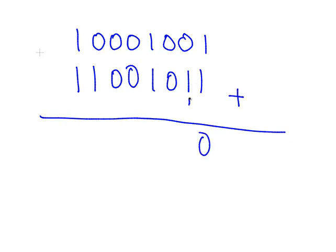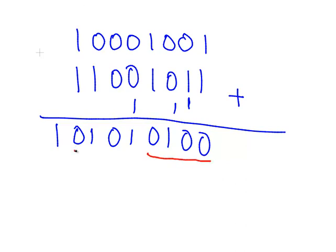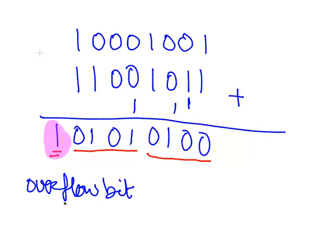1 and 1 gives us 0, carry the 1. 1 and 1 gives us 0, carry the 1. And continuing, 1 and 1 gives us 0, carry the 1. So we end up with bits: 1, 0, 1, 0, 1. We've got 4 bits, 4 bits, and 1 overflow bit. Count from the right-hand side moving left — this is the overflow bit, disregard it. The answer is 0, 1, 0, 1, 0, 1, 0, 0.